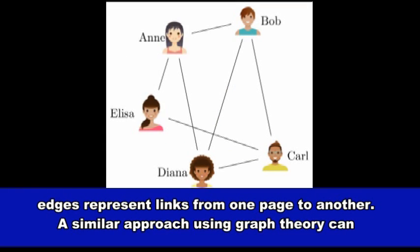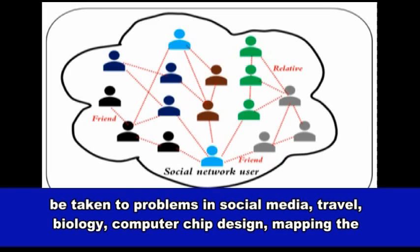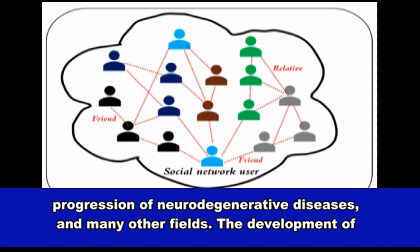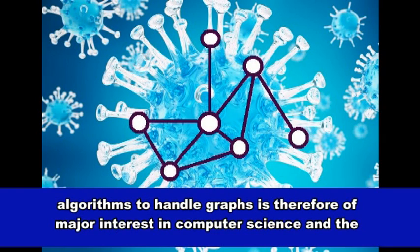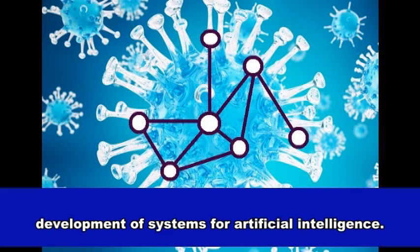A similar approach using graph theory can be taken to problems in social media, travel, biology, computer chip design, mapping the progression of neurodegenerative diseases, and many other fields. The development of algorithms to handle graphs is therefore of major interest in computer science and the development of systems for artificial intelligence.